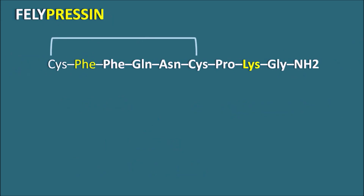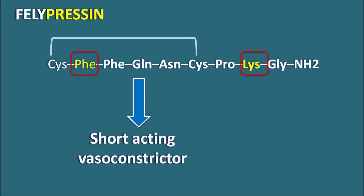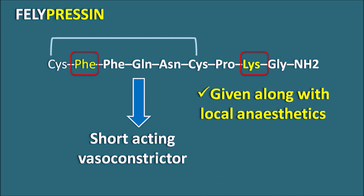Another analog is felipressin. Felipressin has lysine at the eighth position, so it is a lypressin. It is similar to vasopressin with a small difference at the second amino acid — it has phenylalanine instead of tyrosine. So felipressin is a lypressin with phenylalanine at the second position. Felipressin acts as a vasoconstrictor but is short-acting. This drug can be given along with local anesthetics to produce vasoconstriction so that the anesthetic action can be improved locally.